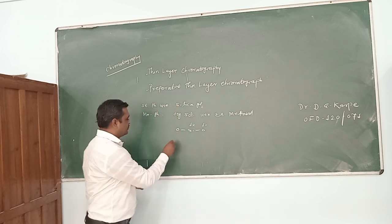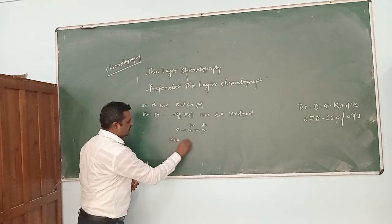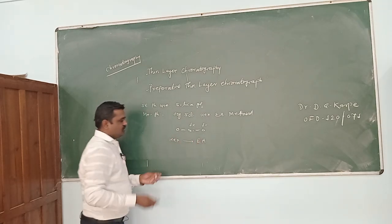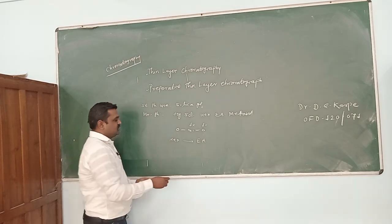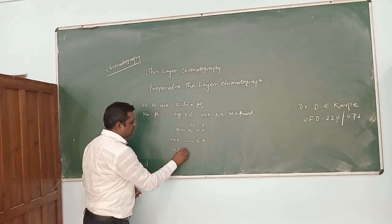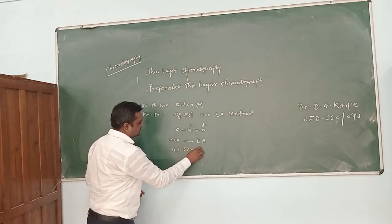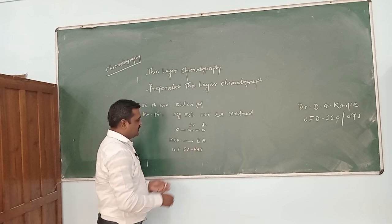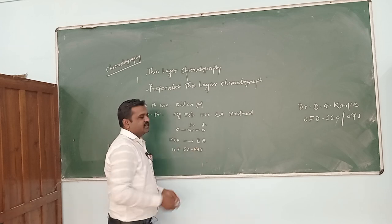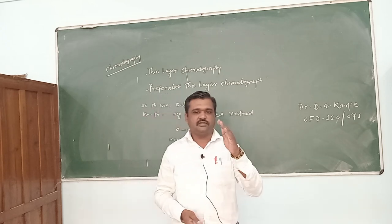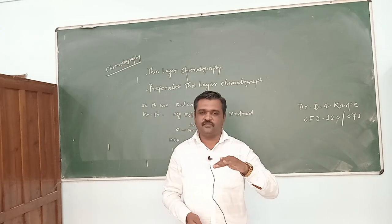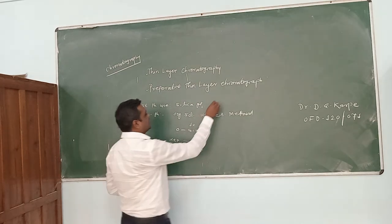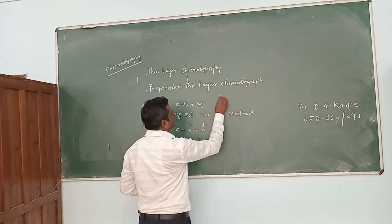Hexane is low polar, then it goes from hexane to ethyl acetate, or a combination of solvents can be used. Suppose 10% of ethyl acetate in hexane is the solvent system — in that case, increasing polarity can take place. Therefore, where the stationary phase is solid and the mobile phase is liquid, such type of chromatography is called adsorption chromatography.